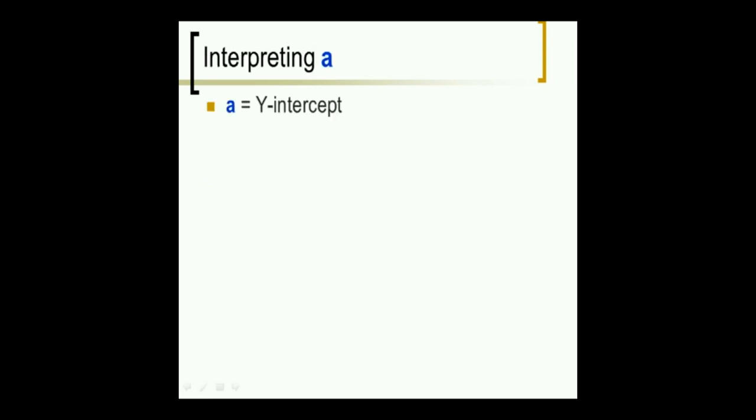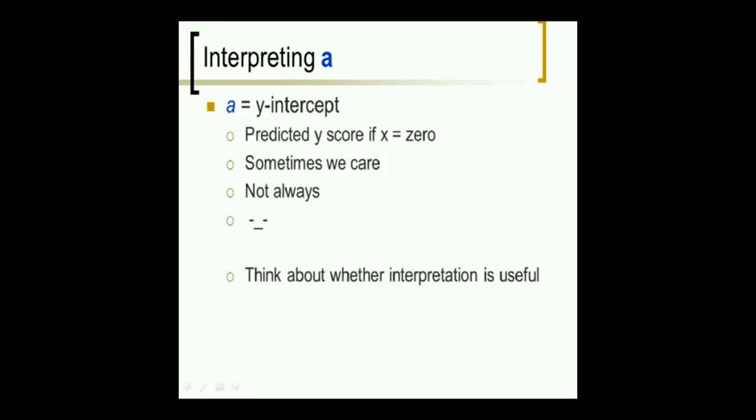Now, interpreting a, a bit of a different question. It's the y-intercept. We need to think about whether interpretation is useful in a particular situation. If you're going to do regression analysis, you'll run into a bunch of situations, and you just have to sit down and think. Does it make any sense? Should I bother interpreting a? Often we don't. It's less likely that we're going to interpret a than that we would interpret b. But sometimes it is. And in deciding this, we have to decide whether the x equals zero point even makes sense.